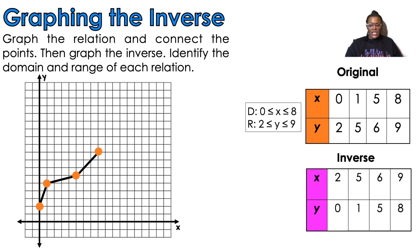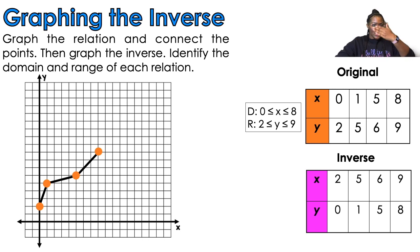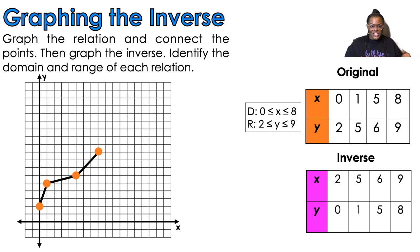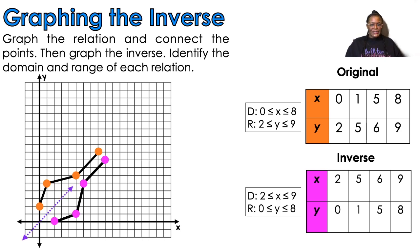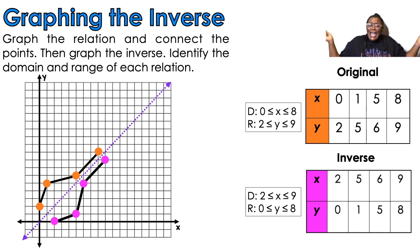Now for the inverse, we switch our x's and y's. So (0, 2) becomes (2, 0); (1, 5) becomes (5, 1); (5, 6) becomes (6, 5); and (8, 9) becomes (9, 8). Plot those points and connect the dots — that's your inverse. If they give you a table, flip the values; if they give you a graph, reflect across the line y = x. The domain and range are also switched because domain is your x-values and range is your y-values.